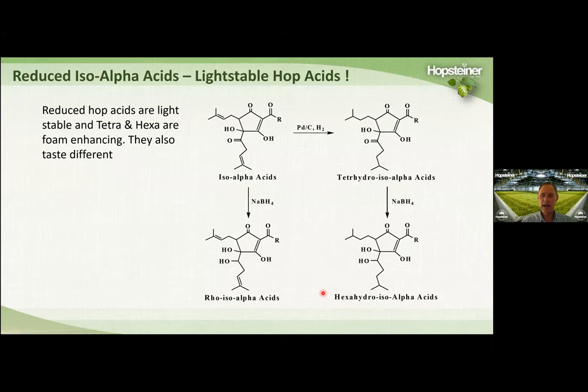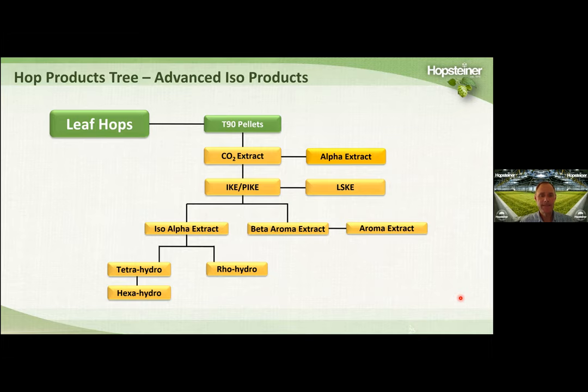What's really interesting is that rho, tetra, and hexa are all light stable. Tetra and hexa are foam enhancing, and all four of these hop acids are bitter — but they have different bitterness profiles and flavors associated with them.